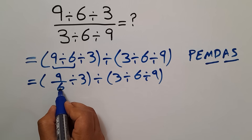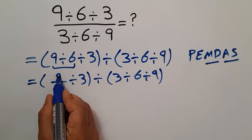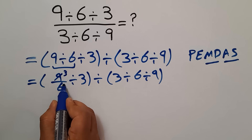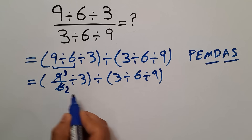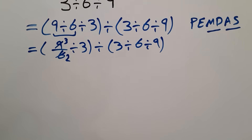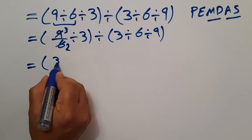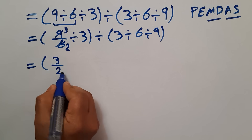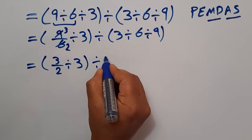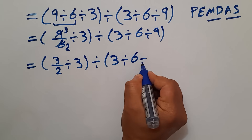9 divided by 6 can be simplified: 9 divided by 3 gives us 3, and 6 divided by 3 equals 2. So we have 3 over 2 divided by 3, divided by 3, divided by 6, divided by 9.